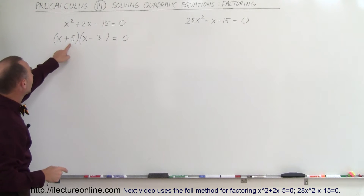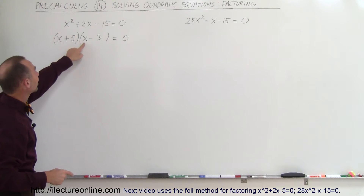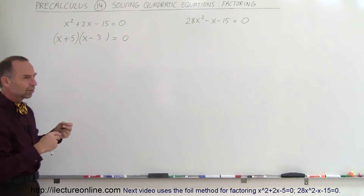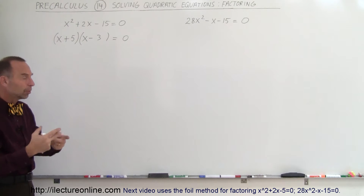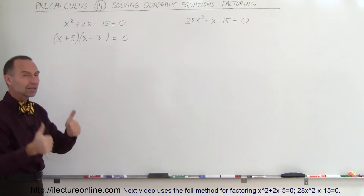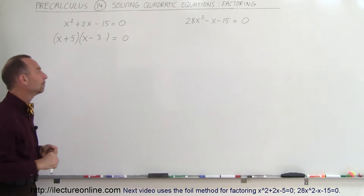A quick check will tell us that 5 times x is 5x, negative 3 times x is minus 3x. That adds up to plus 2x, and when you multiply you get minus 15. So you're good.